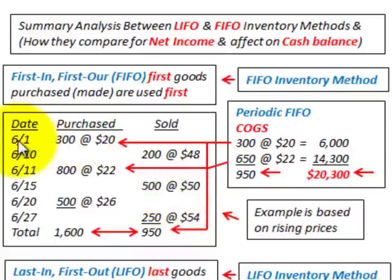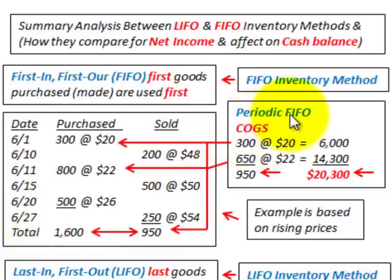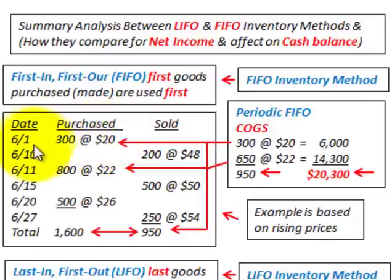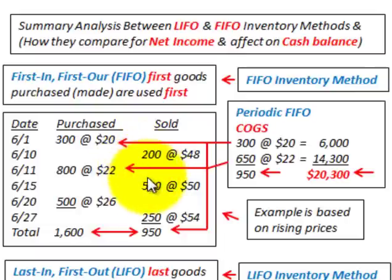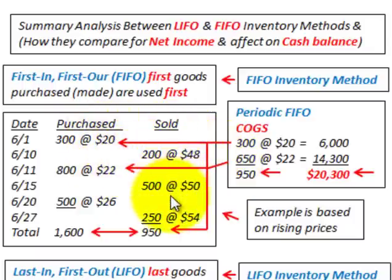For example, our purchased items cover one month, with 6-1 as the beginning of the month and 6-27 as the end. With FIFO on a periodic system, the first units purchased — the earliest ones starting June 1st — are used first against the sales. So our first purchases are used to cost out our sales for the period, and our cost of goods sold calculated out to $20,300.